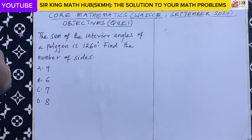Objective question 1. The sum of the interior angles of a polygon is 1260 degrees. You have to find the number of sides.